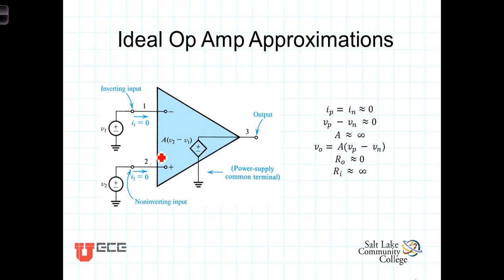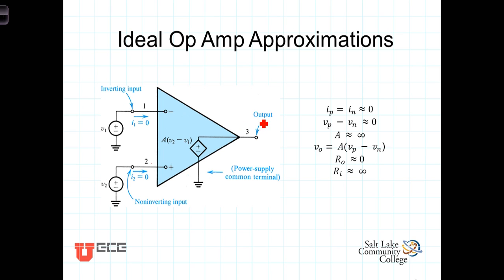First of all, you'll notice the inputs are labeled with a negative sign and a positive sign — there are two different inputs. The output is a scaled version of the difference between these two voltages: V2 and V1. The input terminal marked with a minus sign is known as the inverting terminal. That minus sign isn't meant to imply that you can only have negative voltages here — it simply means that voltages applied to this input will experience an inversion of sign. At the output, the component related to the signal connected to the inverting terminal will have an inverted sign.